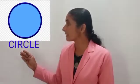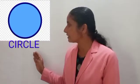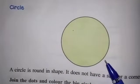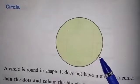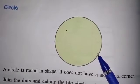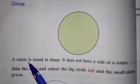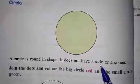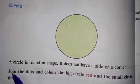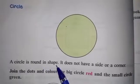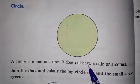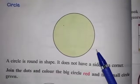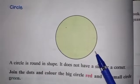The last flat shape is circle. C-I-R-C-L-E, circle. This is a circle. A circle is round in shape. It does not have a side or a corner — there is no side or a particular corner for a circle.